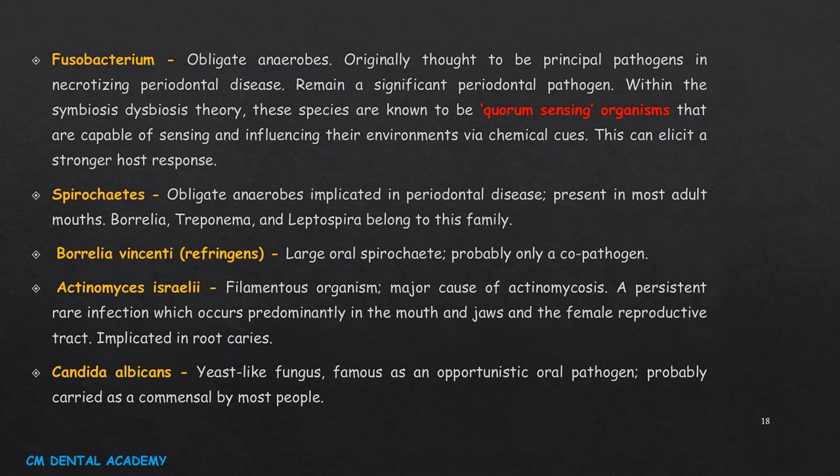Spirochetes are obligate anaerobes implicated in periodontal diseases, present commonly in adult mouths. Borrelia vincenti is a local oral spirochete, probably only a co-pathogen. Actinomyces causes actinomycosis. Candida albicans is a yeast-like fungus, known as an opportunistic oral pathogen, probably carried as a commensal by most people. These are the most common bacteria found in the oral cavity and their associations with gingival and periodontal diseases.